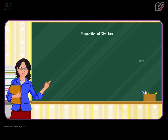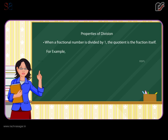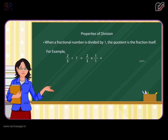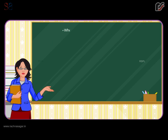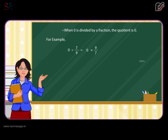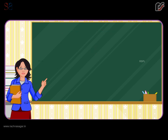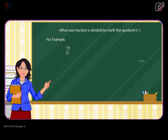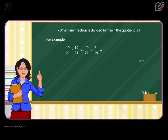Properties of division. When a fractional number is divided by one, the quotient is the fraction itself. For example, two by three divided by one equals two by three. When zero is divided by a fraction, the quotient is zero. For example, zero divided by seven by nine equals zero. When any fraction is divided by itself, the quotient is one. For example, nineteen by twenty-one divided by nineteen by twenty-one equals one.